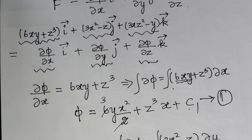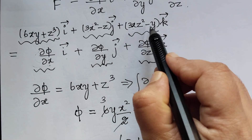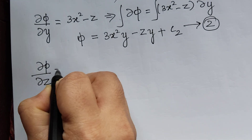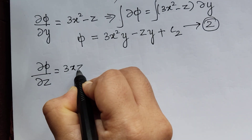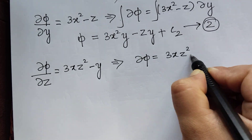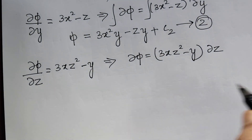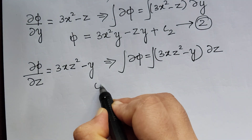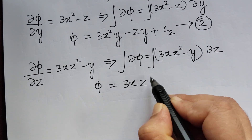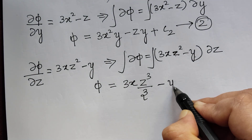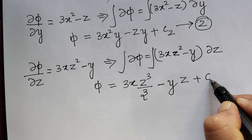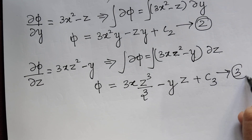Comparing the k-th component: ∂φ/∂z = 3xz² − y. From this, dφ = (3xz² − y) dz. Integrating on both sides: φ = 3x · z³/3 − yz + c₃, which gives φ = xz³ − yz + c₃. Let us mark this as equation 3.